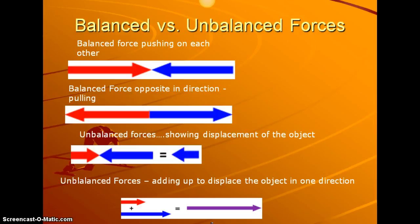Unbalanced forces showing displacement of the object. So in this one our blue force is greater than our red force. And so we see this is the movement here of the object. It will go in that direction in a small distance. Even though the force was great, the distance is not that far because we had this force that it was trying to overcome. And then unbalanced forces where they add up to displace the object in one direction. So we're taking our red force here and our blue force here and adding them up and getting this purple movement of the object.